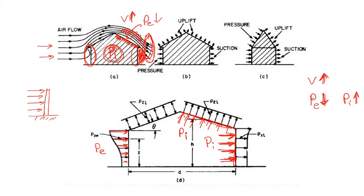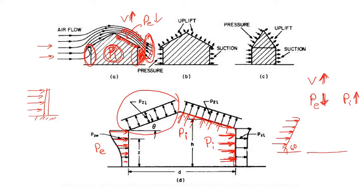Now for the left-hand slope, it depends on the angle. If this slope is around 60 degrees, the external pressure dominates. But if the slope is only 15 degrees, the external pressure is very low and the internal pressure will dominate. So depending upon the slope angle, either external or internal pressure will dominate.